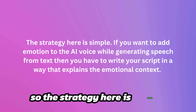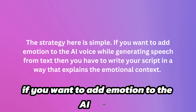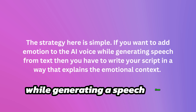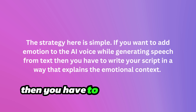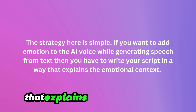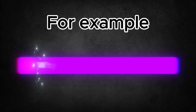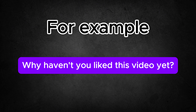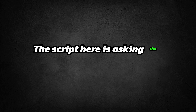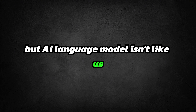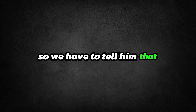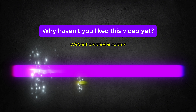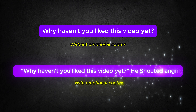The strategy is very simple. If you want to add emotion to the AI voice while generating speech from text, then you have to write your script in a way that explains emotional context. We want to make a voice for this sentence, which is 'why haven't you liked this video yet?' The script is asking the question, but a language model isn't like us, so we have to tell it how to say the sentence. We turn this simple sentence like this.